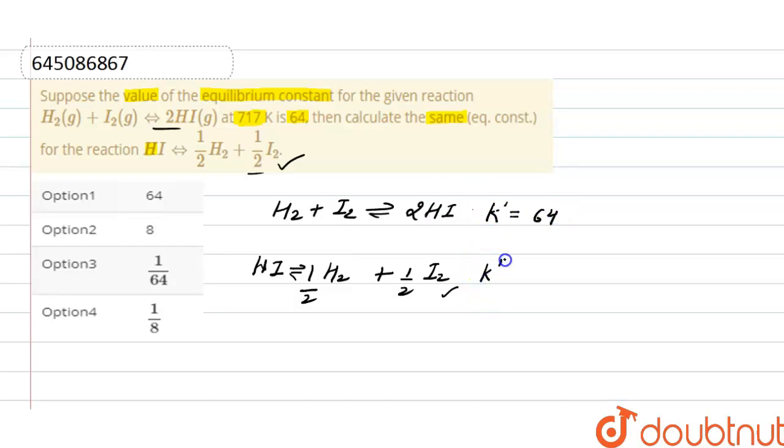And we have to find out the equilibrium constant for this reaction. Now if we reverse the first reaction, what we'll get? It is 2HI gives H₂ plus I₂. That means equilibrium constant is also reversed.